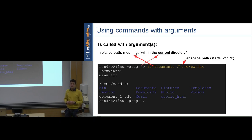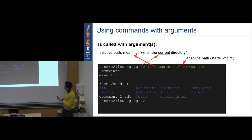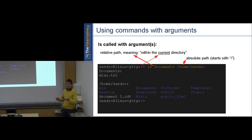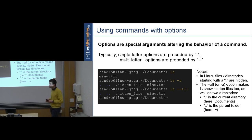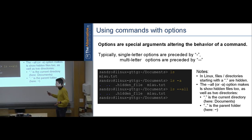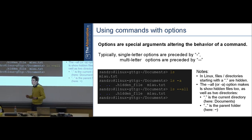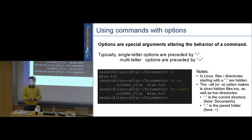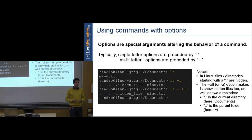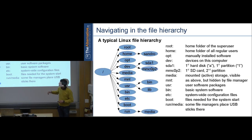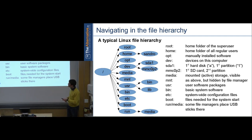A relative file path like 'documents' means relative to the current directory. An absolute file path starts with slash and completely ignores your current location. This distinction is important — sometimes you must use absolute paths.